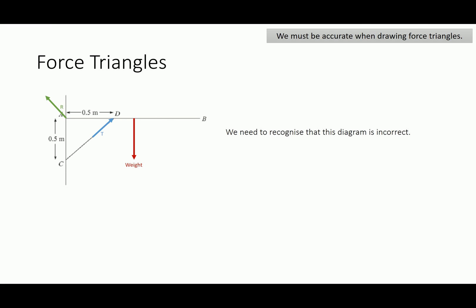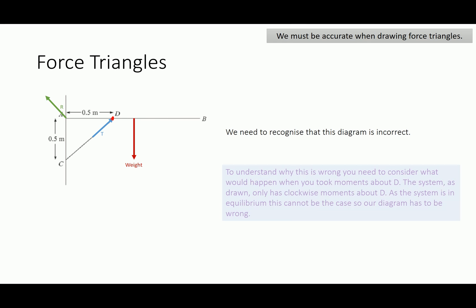Now we can see that it's incorrect because if I was to take moments about the point D, I would only have clockwise moments involved here. And because the system is in equilibrium, I cannot only have clockwise moments. I must also have anticlockwise moments, otherwise I would not be able to have this balance of clockwise and anticlockwise moments.